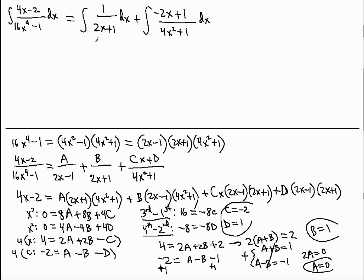The first remaining term, 1/(2x + 1), is handled by u-substitution. With u = 2x + 1, du = 2 dx, so we get (1/2) ln|2x + 1|.